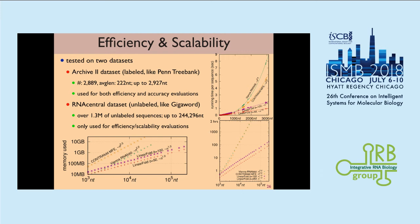In this figure showing running time, comparing baseline systems — the green line for Vienna and the yellow line for CONTRAfold — against our linear time systems, our algorithm stays linear time. When the sequence length is 3,000, we take two seconds instead of five and seven seconds for the baselines.